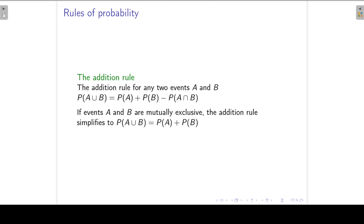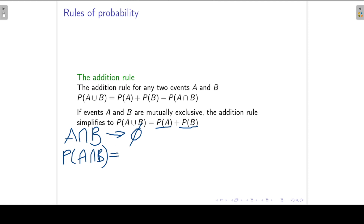We subtract the probability of the intersection once because we have added it twice. If events A and B are mutually exclusive, the addition rule simplifies to P(A∪B) = P(A) + P(B), because when A and B are mutually exclusive, A∩B is the impossible event, so P(A∩B) = 0.